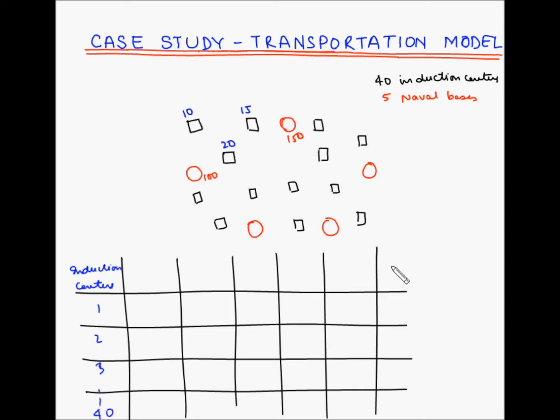On the extreme right, we will place the number of recruits at each of these induction centers. Let us say 10, 20, 30 and so on. On the top, we will place the naval bases.